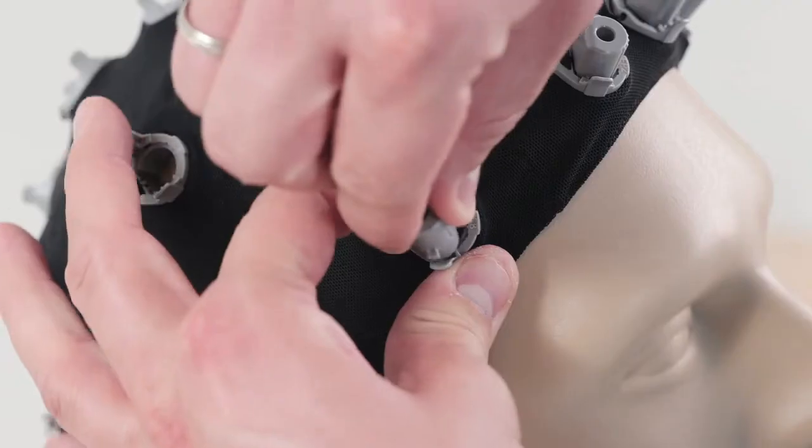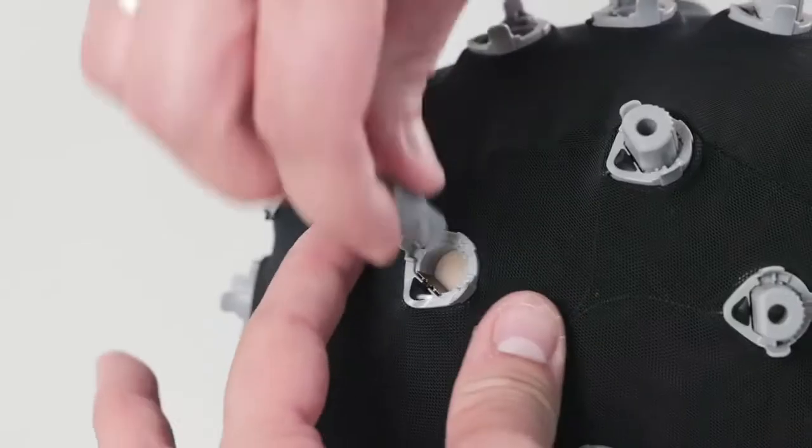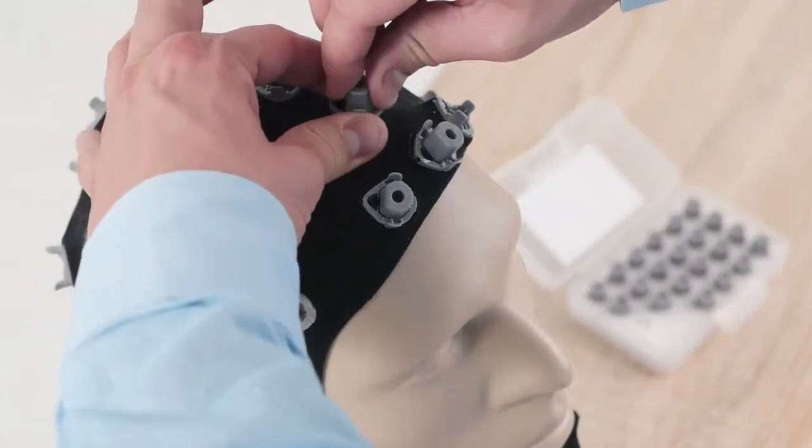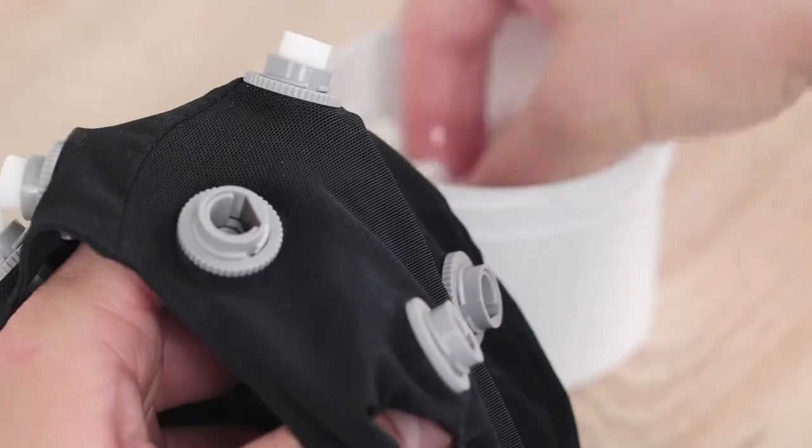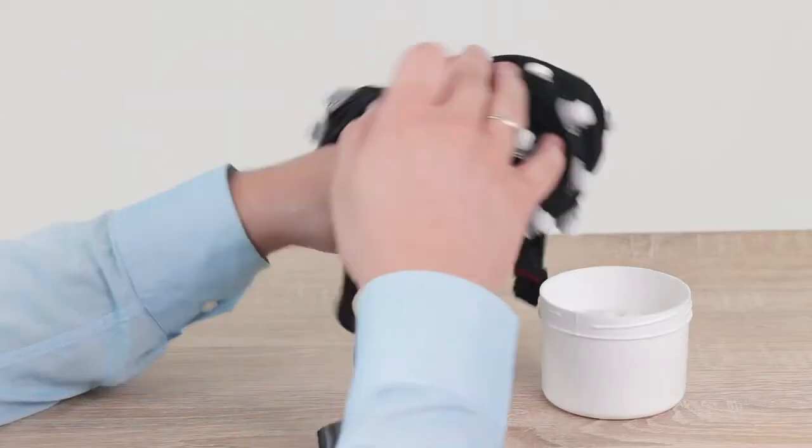Insert the sponge holder into the electrode base. Screw the sponge holder clockwise. A click sound indicates that the holder has been properly placed in the electrode base. Take the sponge from the wetting container and gently squeeze out any extra saline solution. Place the sponge in the holder.